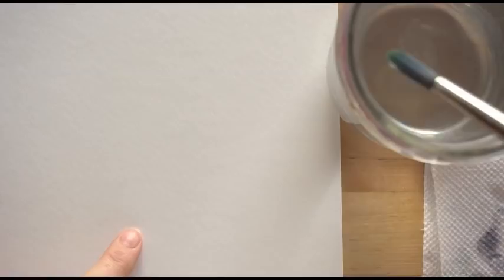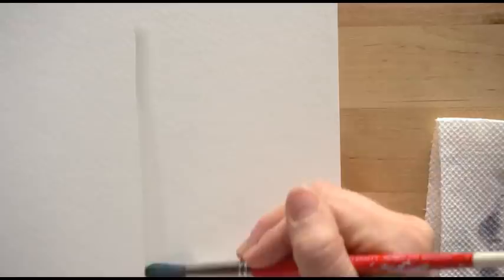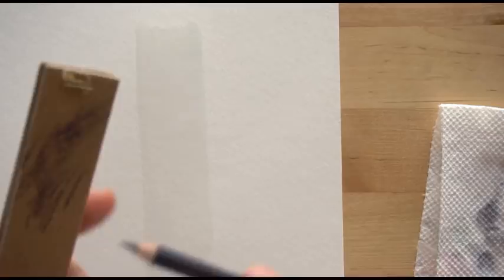All right the first thing you want to do is paint in your tree trunk. Dip your paintbrush in your water and go ahead and paint the tree trunk. Then you want to take your water-soluble pencil and you're going to sand it into that wash. You can add as much or as little as you want.